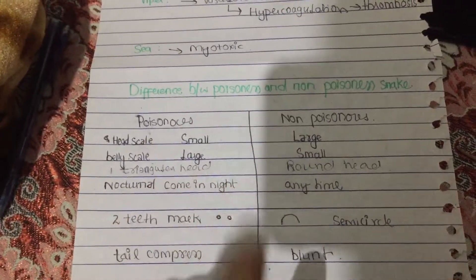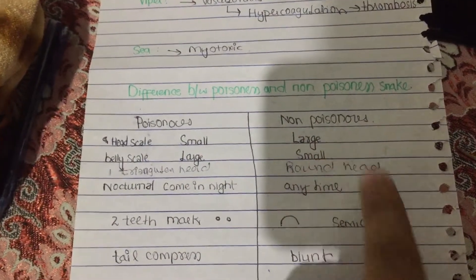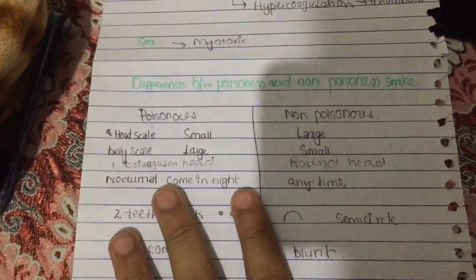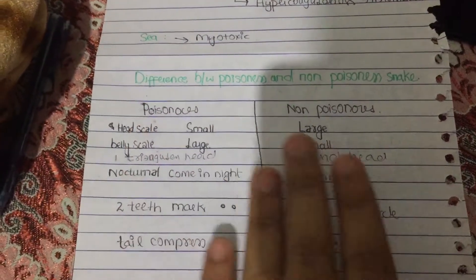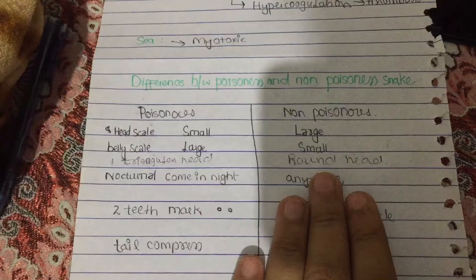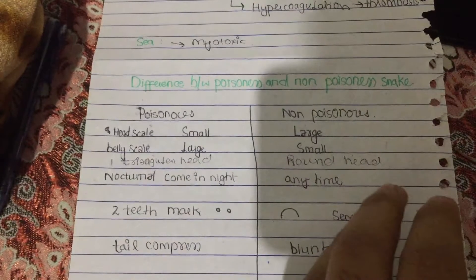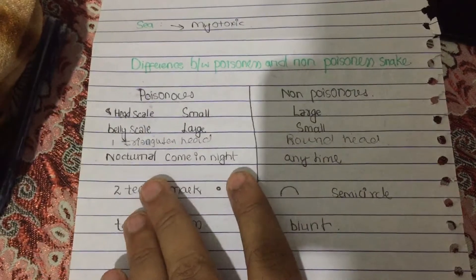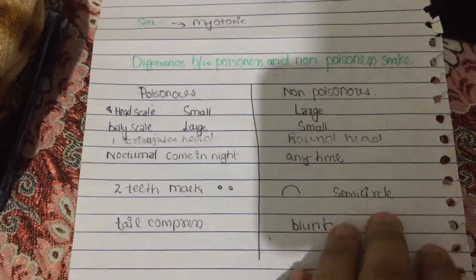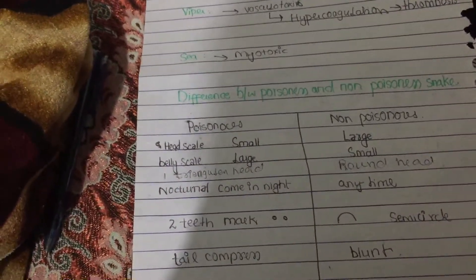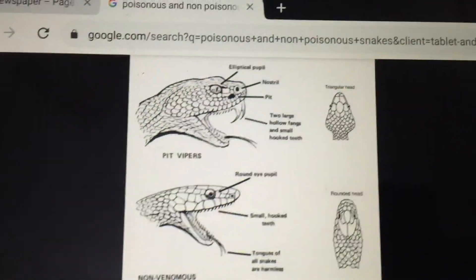In a poisonous snake the head is triangular, while in a non-poisonous snake it is rounded or C-shaped. The poisonous snake is usually nocturnal, coming out at night, while the non-poisonous snake is active 24 hours. If you check the bite mark, a poisonous snake leaves two teeth marks on the skin, while a non-poisonous one leaves a semicircular mark.